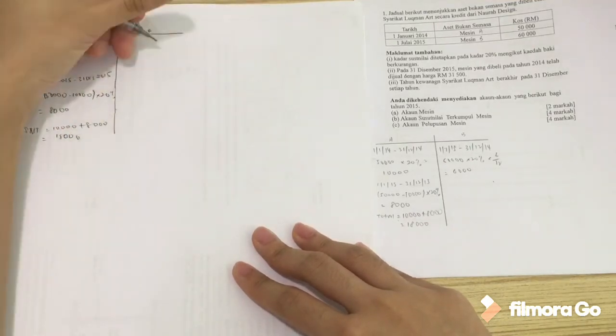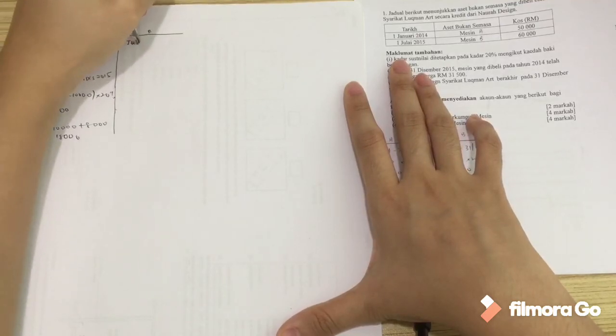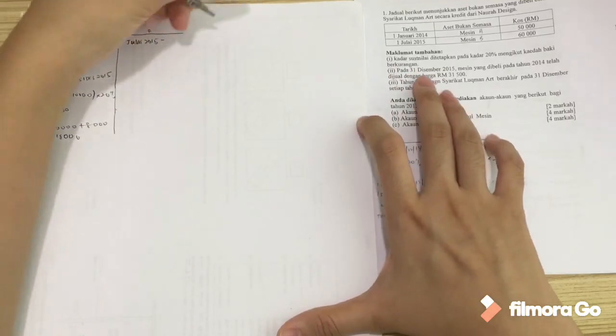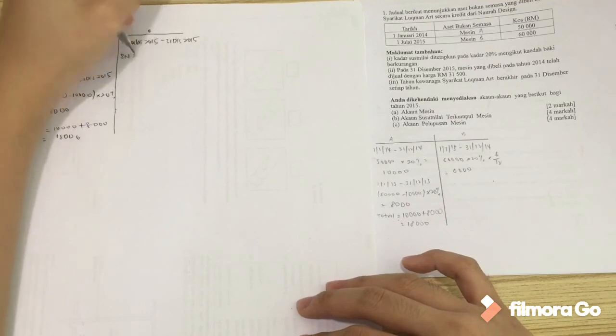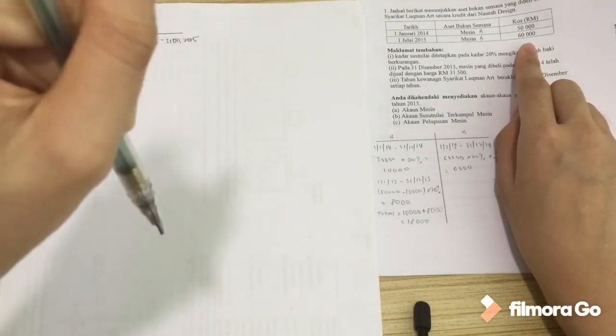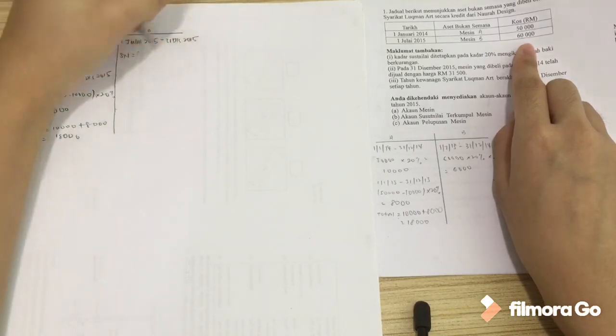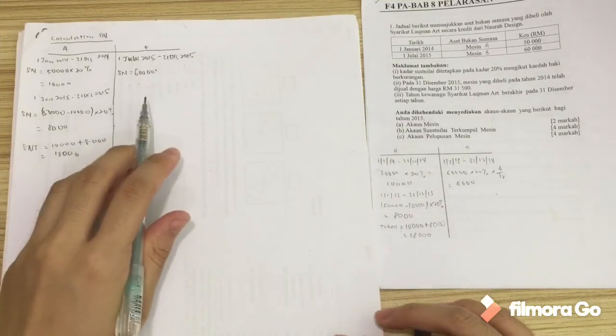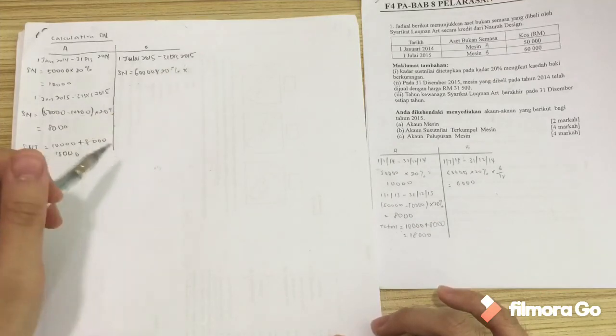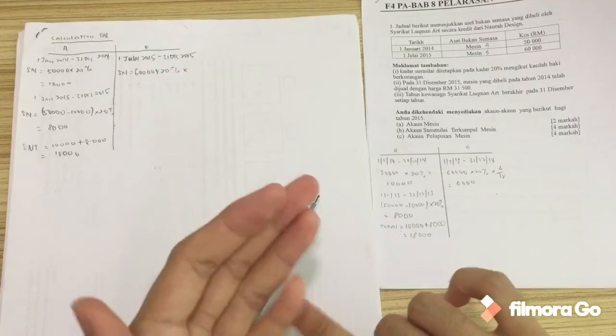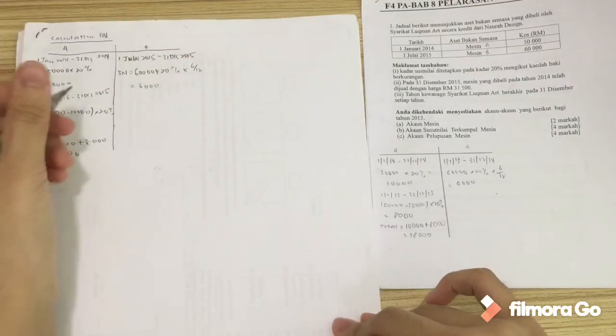This is for machine A. For machine B, we bought it on the 1st of July and then we count to December. What we should do is we take the cost, 60,000, and we multiply it with the percentage which is 20%. So how many months is this? This is not one whole year. July, August, September, October, November, December - 6 months. 6 over 12. So we get 6,000. That's it for our calculation of susut nilai. Let's proceed to the 1st account.